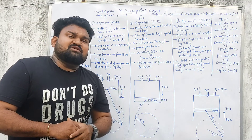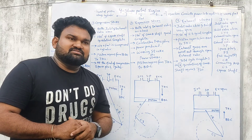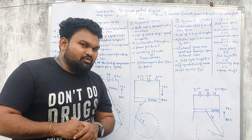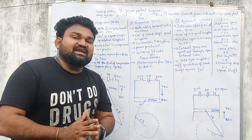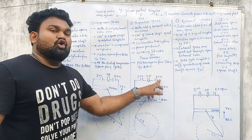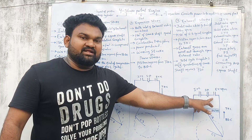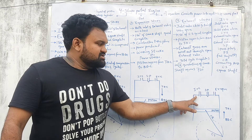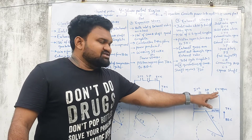After combustion, the exhaust gas is still in the cylinder. The piston will push the exhaust gases out. The exhaust valve is open. The spark plug position is noted. The exhaust valve opens to allow gases to escape.